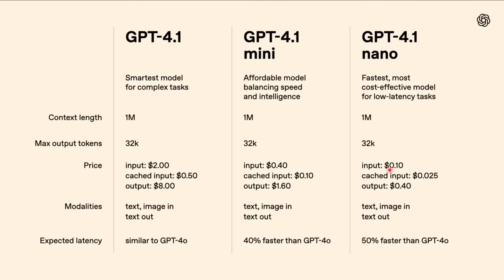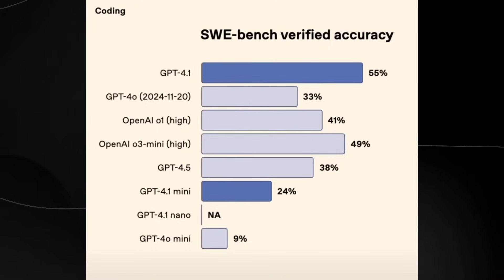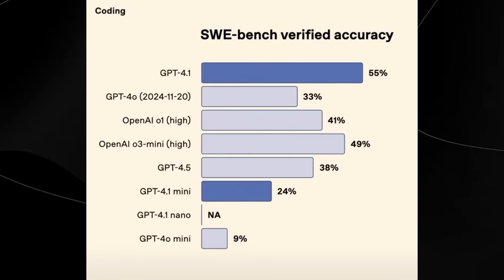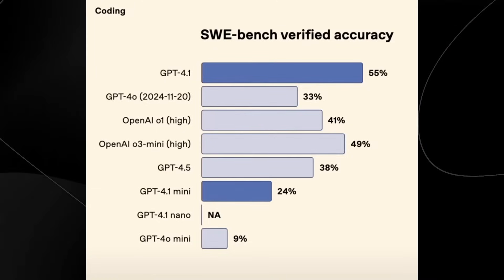I suspect OpenAI did this because there are now many models that can handle various tasks at relatively low cost, so OpenAI wanted to bolster their model offerings. When we look at benchmarks — and this won't be a heavy benchmark video — OpenAI themselves have said they wanted to focus on real-world implementation.